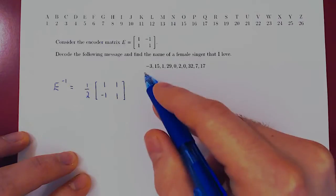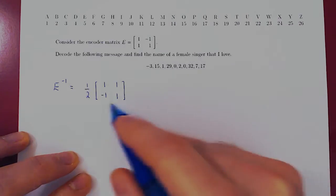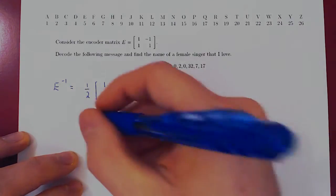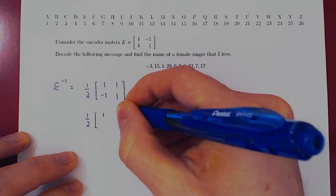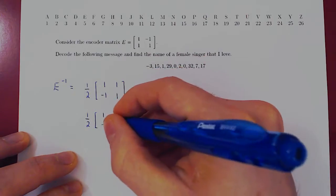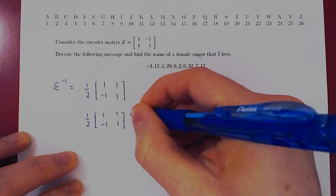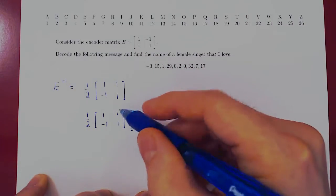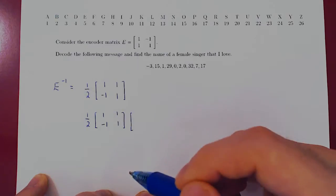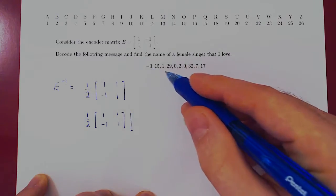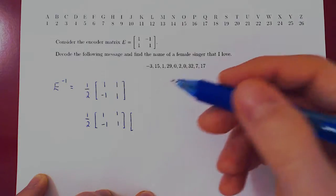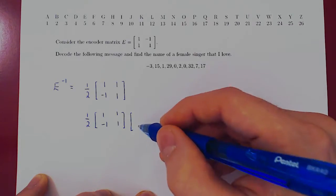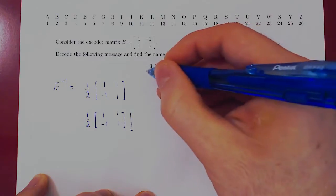And so we'll decode the message using our inverse matrix. So 1 half, 2, 1, negative 1, 1, times our message. Well, because we have a 2 by 2 matrix, we have to rewrite our encoder message into a matrix where the columns have length 2. So first, negative 3, 15.